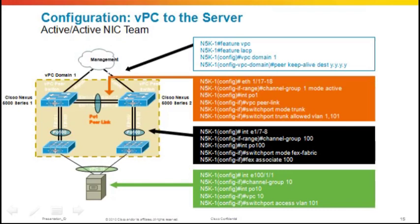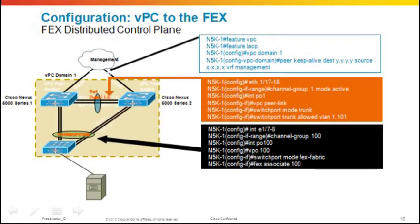For VPC to the FEX — where one FEX has links to each 5K — the first two steps are the same: configure VPC domain, peer keep-alive, and peer link. The difference is that you add a VPC statement to the port channel going to the FEX on both 5Ks. In this case the FEX has two uplinks to 5K1 and two uplinks to 5K2, and on both 5Ks we call it VPC 100. This concludes how to configure VPC to the FEX.